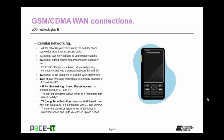Cellular networking involves using the cellular phone system for more than just phone calls. The first version is 1G cellular, which was only capable of voice transmissions. As improvements came along, we got 2G — cellular with simple data transmission capabilities, such as text messaging. 2G Edge offered some basic cellular networking connectivity and was a stopgap between 2G and 3G. 3G cellular is the beginning of cellular WAN networking, and it's giving way to 4G cellular, which currently consists of both LTE and WiMAX.